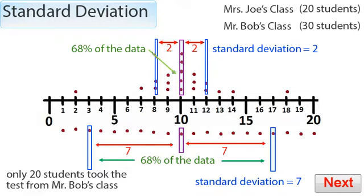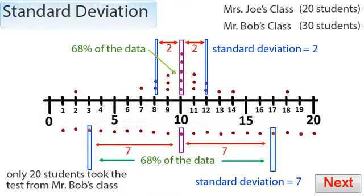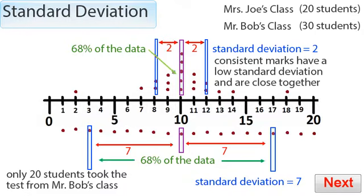What we can gather from this data is that Mr. Bob's class is very spaced apart and Mrs. Jo's class is very close together. You can tell by the standard deviation. If the standard deviation is really small, your data will be close together. If the standard deviation is large, your data will be very spread out. Mrs. Jo's class is an example of marks being consistent, meaning that everyone's marks are very similar in the test.